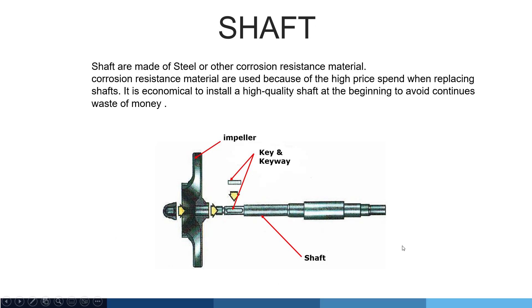Shaft. Shafts are made of steel or other corrosion-resistant metal. Corrosion-resistant metals are used because of the high cost when replacing the shaft. Instead of doing repeated replacement, it is better to have a high quality shaft from the beginning to avoid continuous waste of money. In this picture you can see the parts of the shaft: the impeller, keys and keyway, and shaft. These are very important for your fitter to understand before disassembling or assembling the pump.